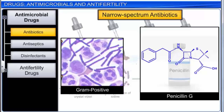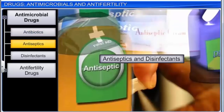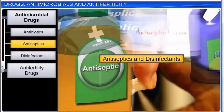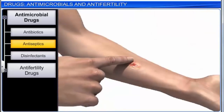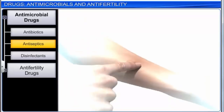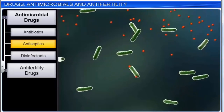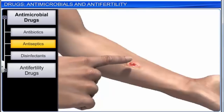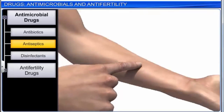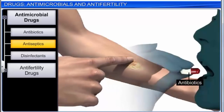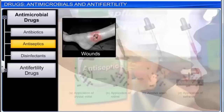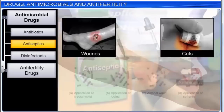Now let's look at other antimicrobial drugs: antiseptics and disinfectants. An antiseptic is a substance that kills or inhibits the growth of microorganisms on the external surfaces of the body. Unlike antibiotics, they are not ingested but are applied on living tissue — like on wounds, cuts, ulcers, and diseased skin surfaces.